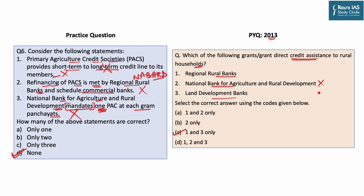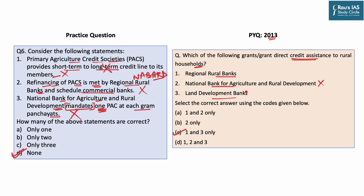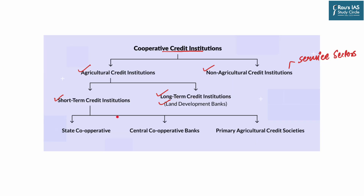NABARD does not provide direct credit assistance to rural households — it is a refinancing agency. Here is the basic classification of cooperative credit institutions in India: we have agricultural credit institutions and non-agricultural credit institutions. Under agricultural credit institutions, there are short-term and long-term credit institutions. In the long-term, we have land development banks, on which UPSC asked a question in 2013. For short-term, we have state cooperatives, central cooperative banks, and primary agricultural credit societies, on which we have framed a question.